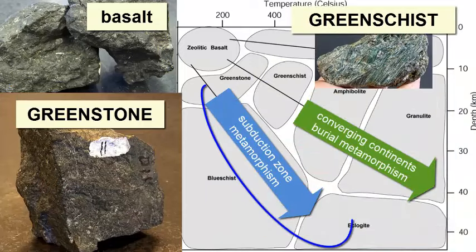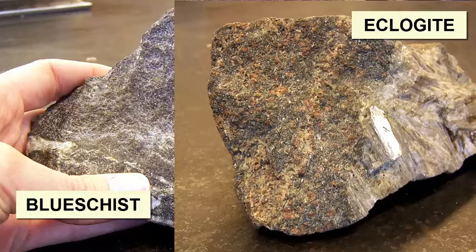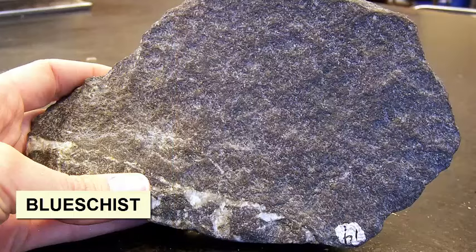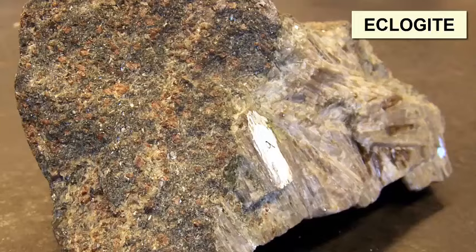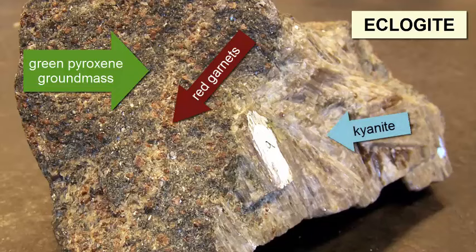If the greenstone is in a subduction zone environment, where pressures quickly rise while temperatures lag behind and water contents are high, this rock — blueschist — will form, followed by eclogite at the highest grade of subduction. Blueschist is a fine-grained, bluish-colored schist dominated by blue amphiboles and other silicates. Eclogite is distinguished by its green groundmass, produced by small green pyroxene crystals, and scattered red garnets. It also can contain some kyanite crystals, which only form at the highest pressures in a subduction zone environment.